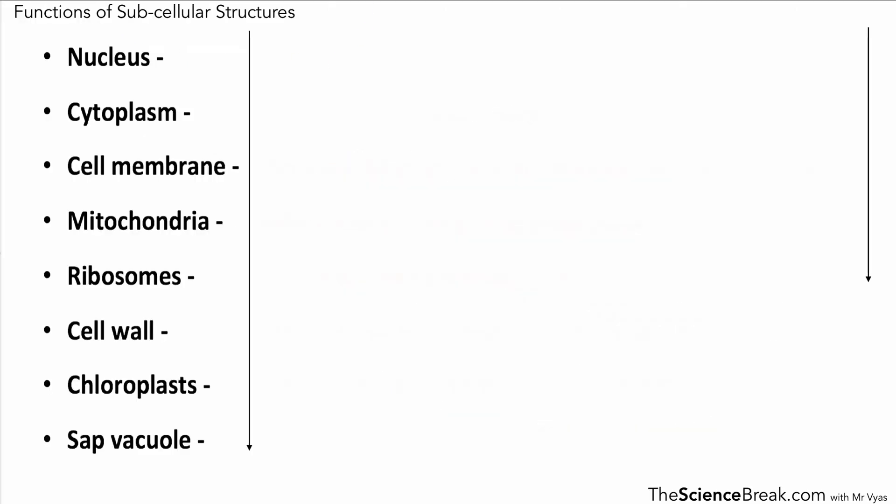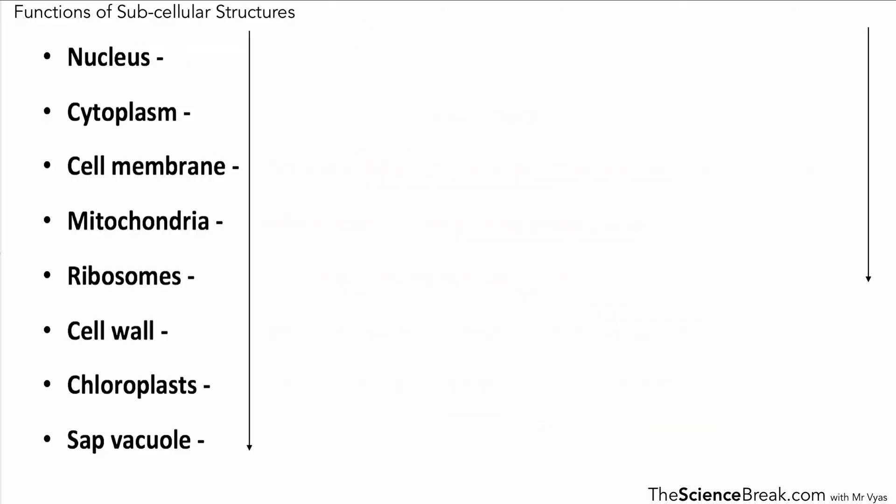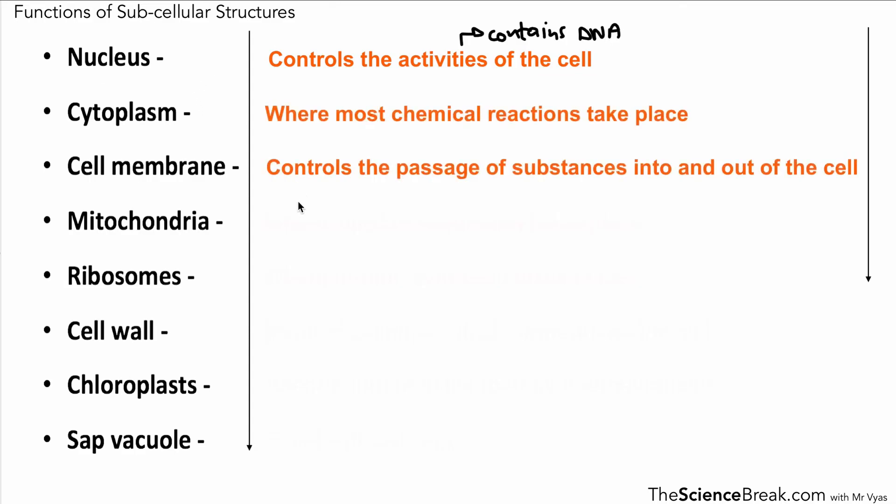It's probably worth giving yourself a little test on the functions of the different parts. Let's go through them: the nucleus controls the activities—remember it contains DNA which has genes. The cytoplasm and cell membrane you can read there. The mitochondria is where aerobic respiration takes place—that's respiration with the use of oxygen—and that process releases energy.